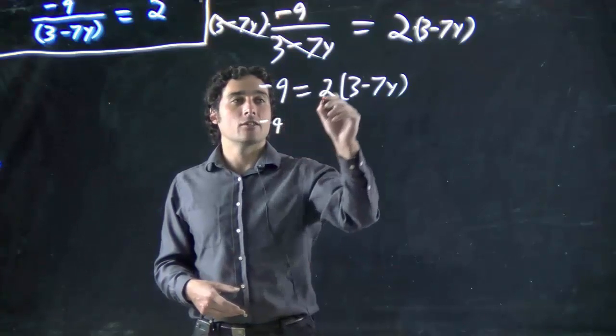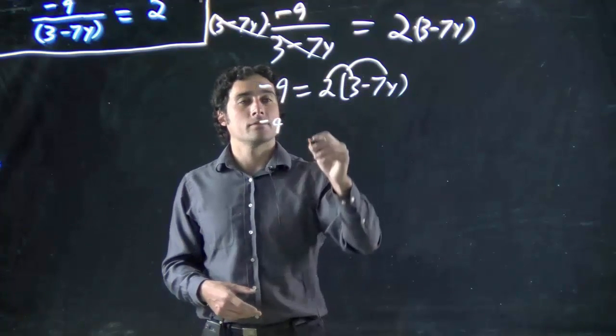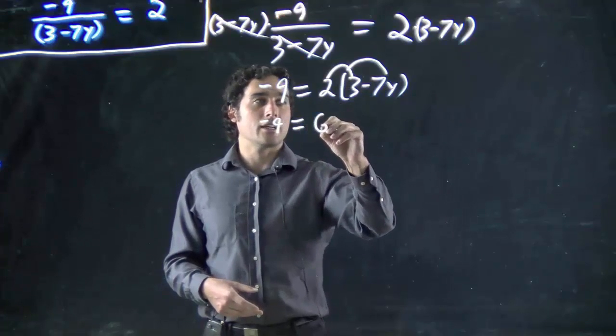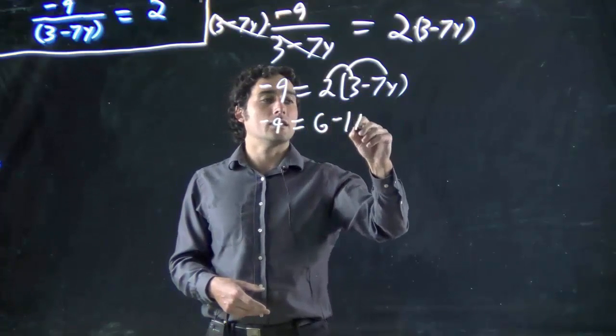So we get minus 9. Remember, this 2 has to be multiplied by both terms. So we get 6 minus 14y.